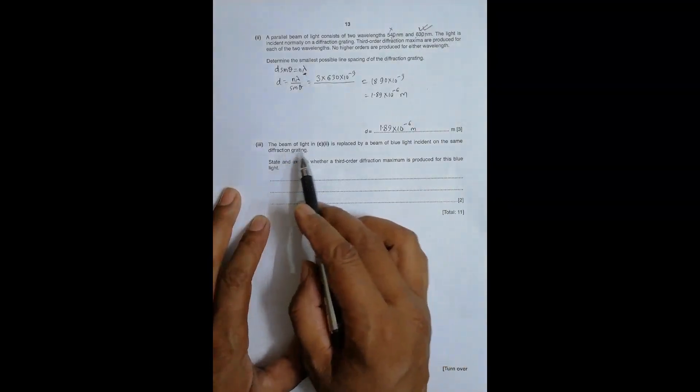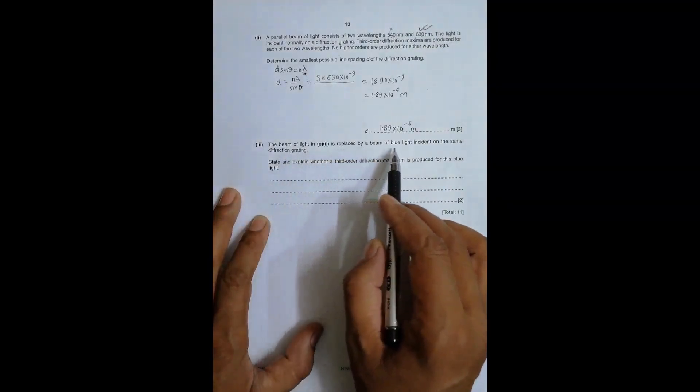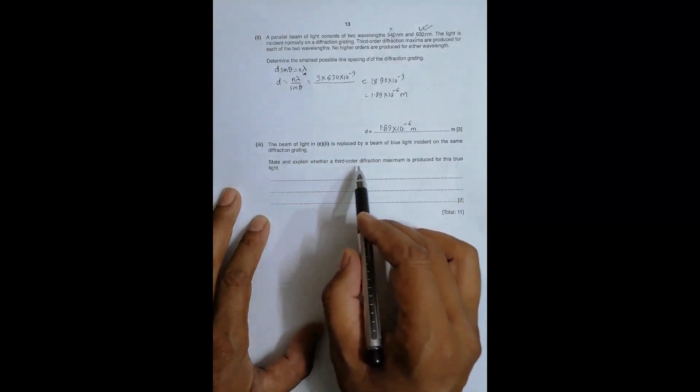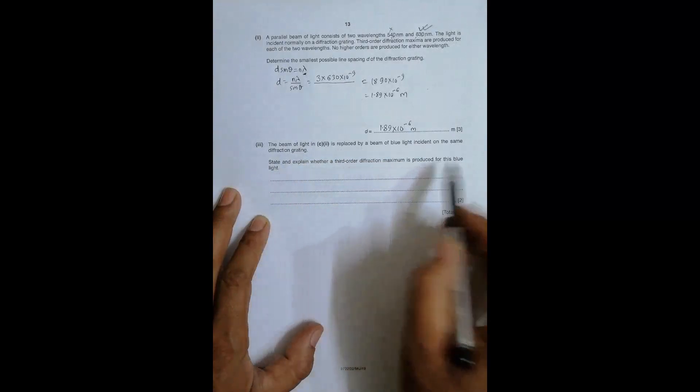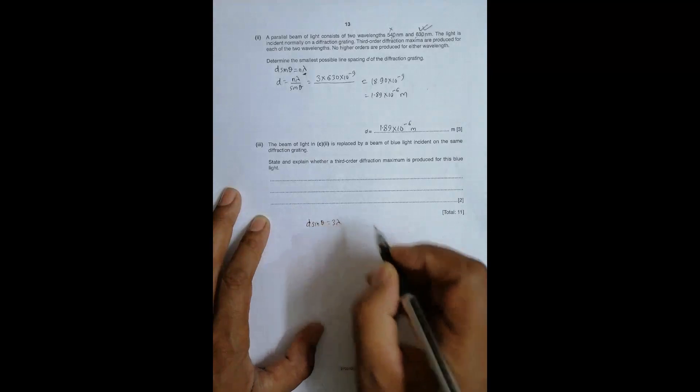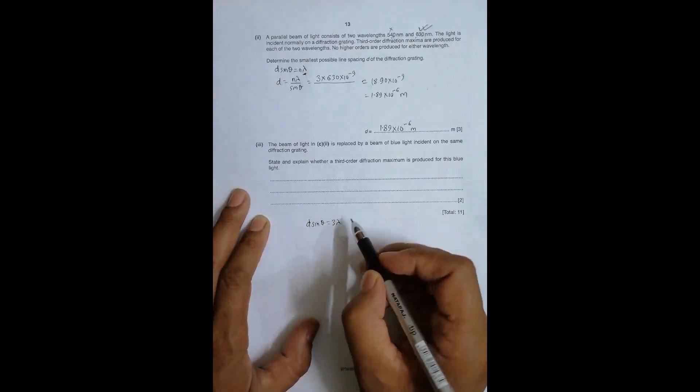Now the beam of light in C2 is replaced by a beam of blue light incident on the same grating. Explain whether third-order diffraction maximum is possible or not. So in this case, let us again go for this equation: d sin θ equals 3λ. We have to find whether this is possible or not.